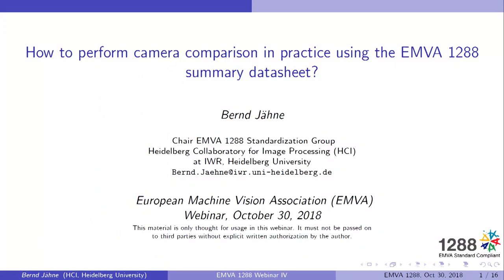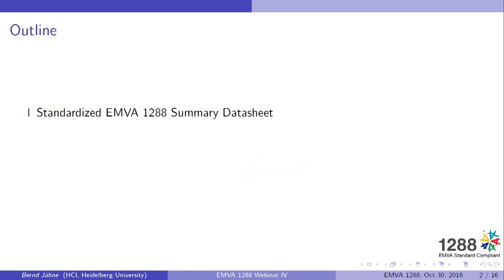As I said already, it's the fourth webinar in a series of four and today we will discuss the practical usage of the standard and answer the question: how can we really perform camera comparison in practice using this unique new feature of the standard, the one-page summary data sheet? The outline of today's webinar will be that I will first explain the elements of the summary data sheet and then we will use it to make some practical camera comparisons, making use of what we discussed in the third webinar — namely all the requirements from the applications.